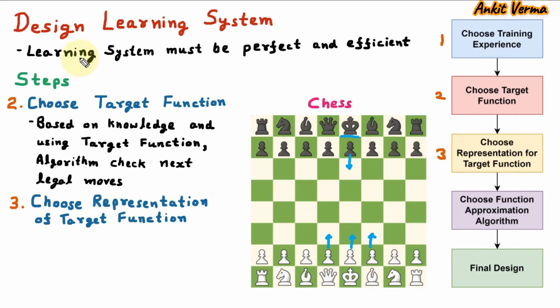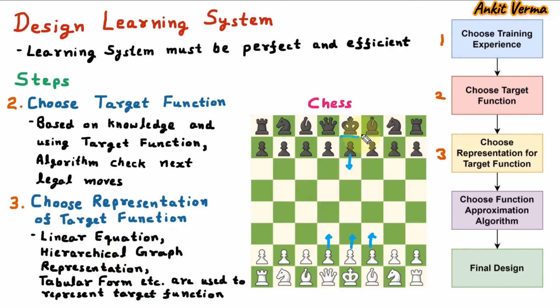Now, the third step in designing learning system is choose representation of target function. Linear equation, hierarchical graph representation, tabular form, etc. are used to represent target function. Here in the chess, the target function is to defeat this king.